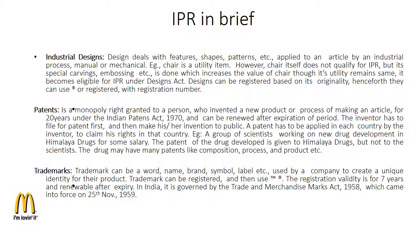The first type is industrial design. This deals with features, shape, pattern, etc. applied to an article by an industrial process — manual or mechanical. For example, a chair is a usual item. However, the chair itself does not qualify for IPR, but its special covering, embossing, etc., which increases the value of the chair while its utility remains the same, makes it eligible for IPR under the Designs Act. Designs can be registered based on originality, and they can then use the registered mark with registration number.